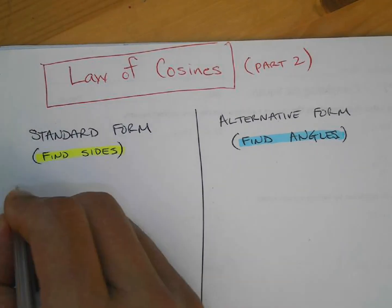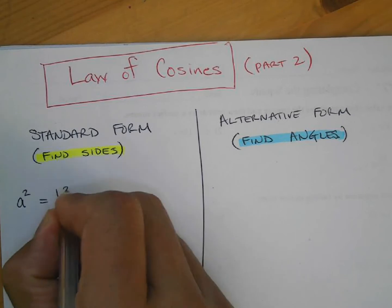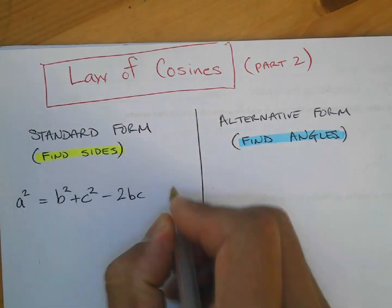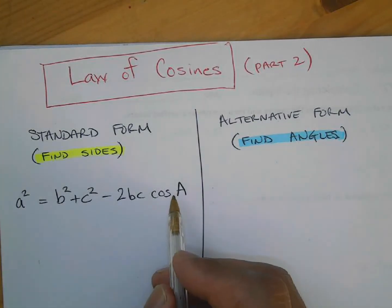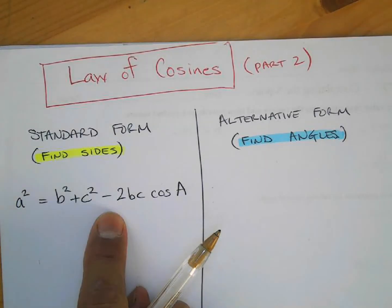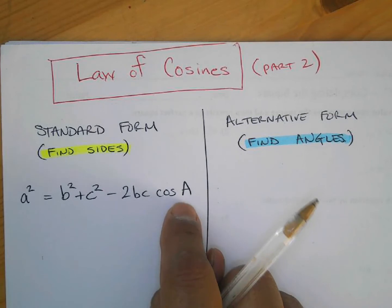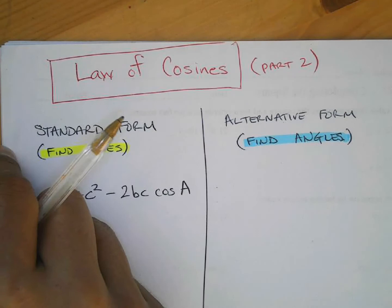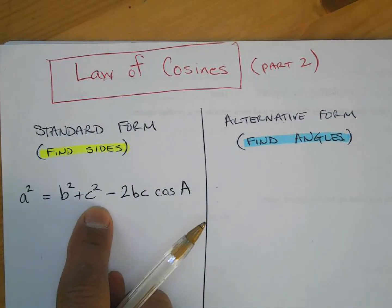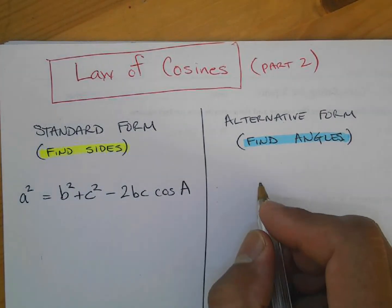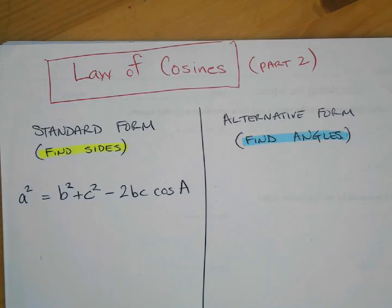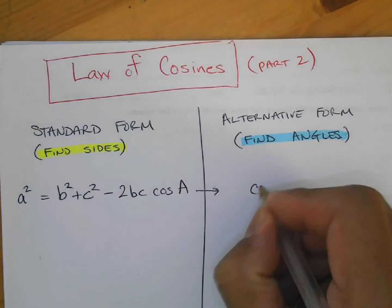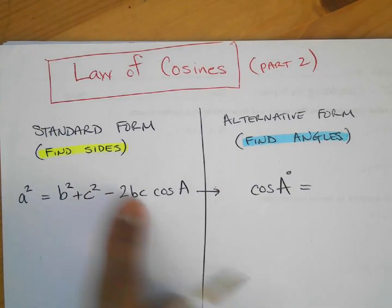The first set of formulas we learned are used to solve for sides. One of them was a² = b² + c² − 2bc·cosA. Since this has a negative 2bc·cosA, if you move that piece to the other side you get b² + c² − a², and they're solving for cosine A. I'm just going to give you the formula — they derive it from here to find an angle. This one you use for sides.